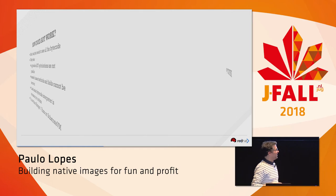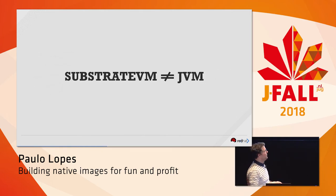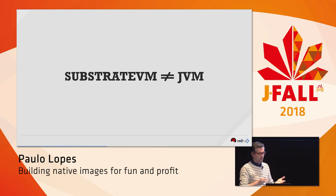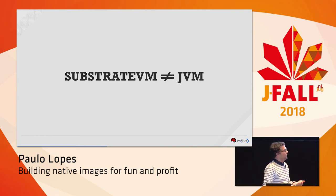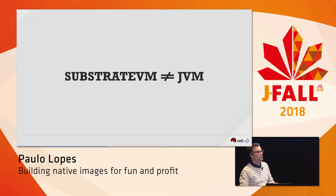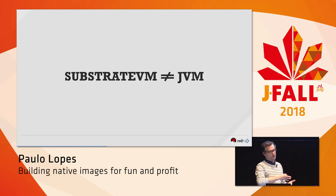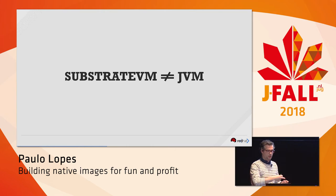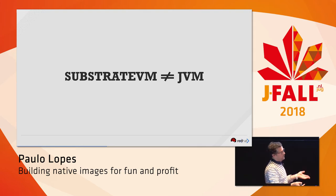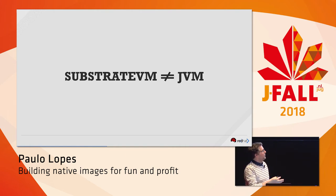SubstrateVM is not the JVM — it's just a very small subset of features, and even the features that are there are not a one-to-one mapping. One example is the garbage collector. The second difference is that since the code has already been translated into assembly, there is no just-in-time compiler anymore. The final binary will not perform better over time as it does on a JVM. On a JVM, the JIT compiler observes which methods are used more often and optimizes those for the specific workload. With native images, since it's always pre-assembled, there are no further optimizations.